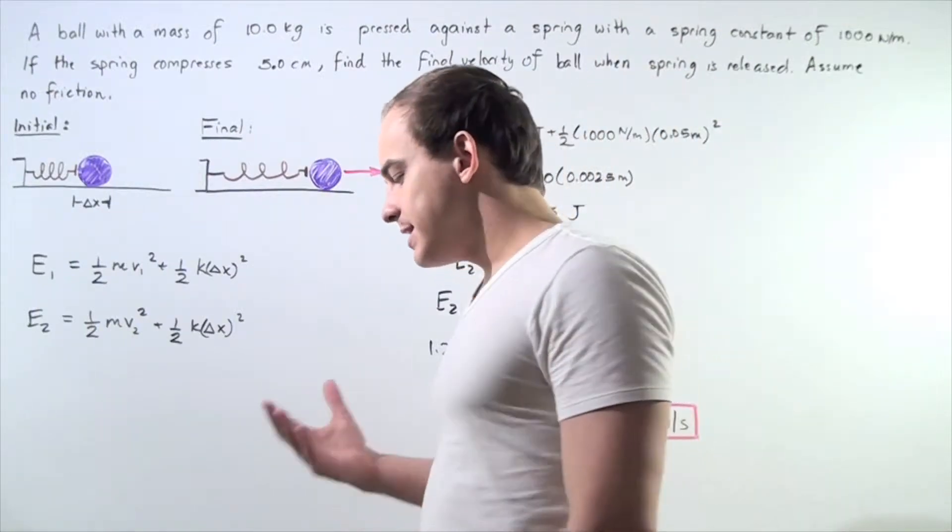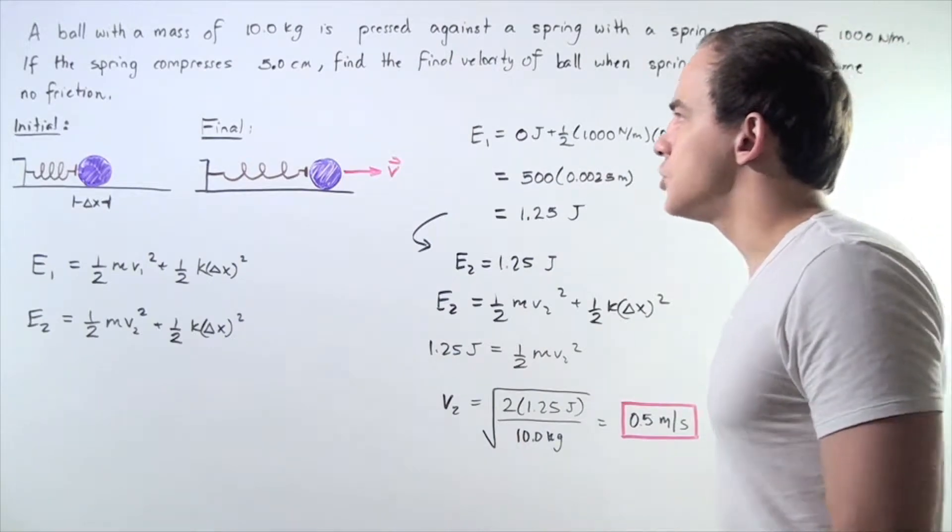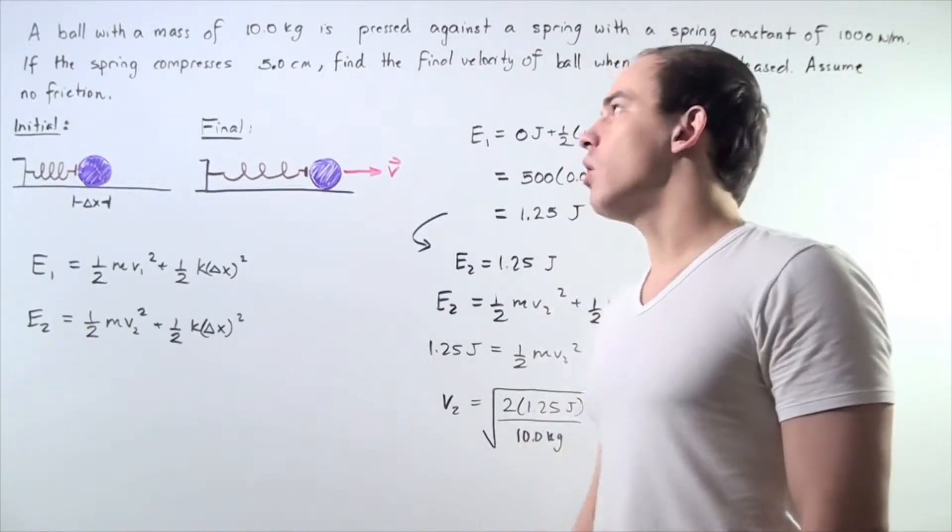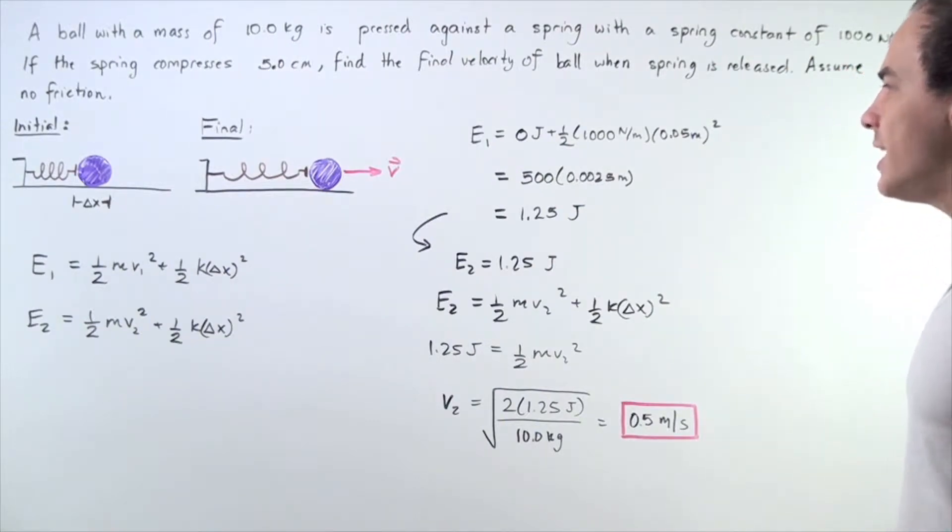Let's look at the following example that deals with the conservation of mechanical energy. Suppose a ball with a mass of 10 kilograms is pressed against a spring with a spring constant of 1,000 newtons per meter.